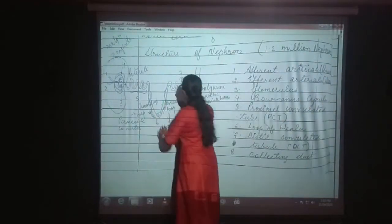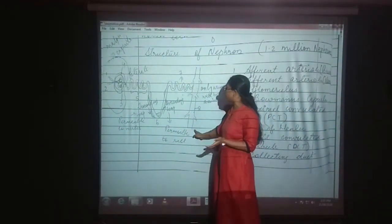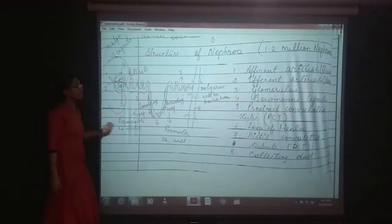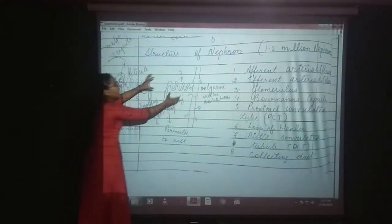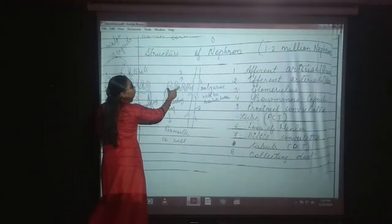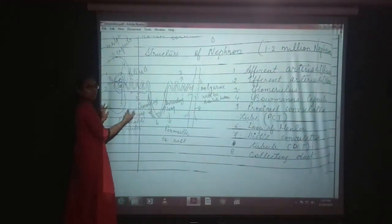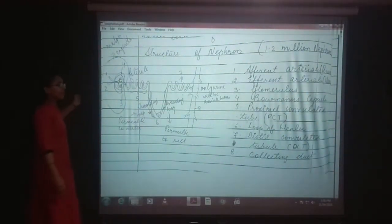Whatever the wanted things are there — salts, bilirubin, or anything — inside this urine, the wanted materials like potassium and phosphorus are absorbed from different organs. The distal convoluted tubule and loop of Henle all absorb the nutrients. These are the different functional regions of the nephron.